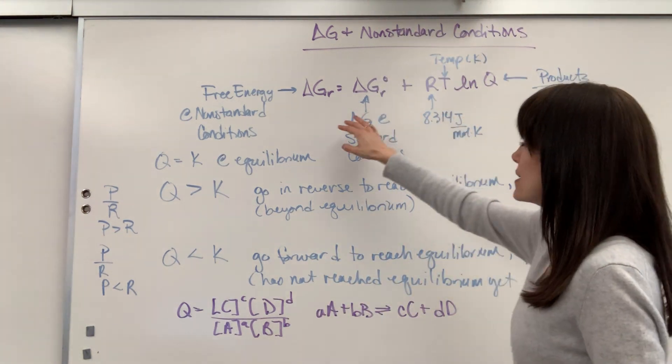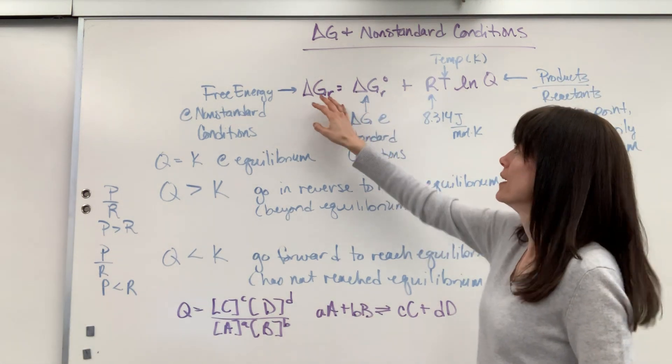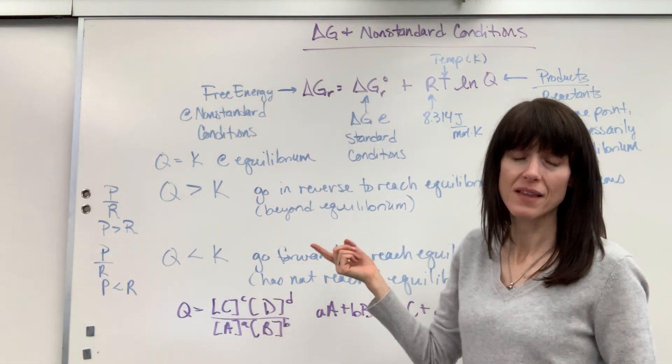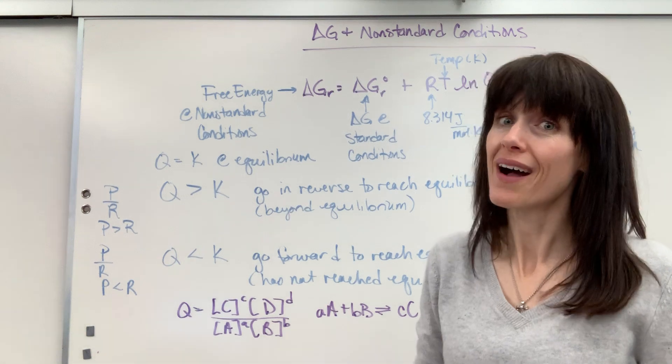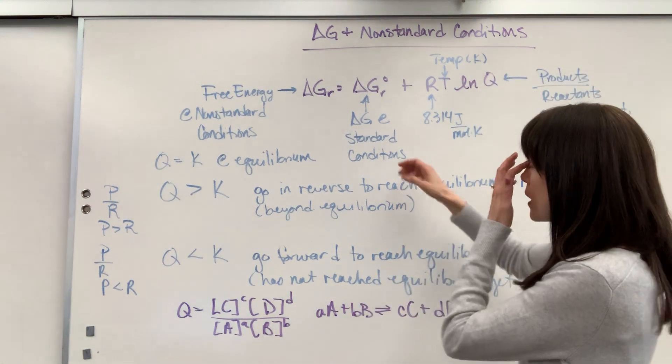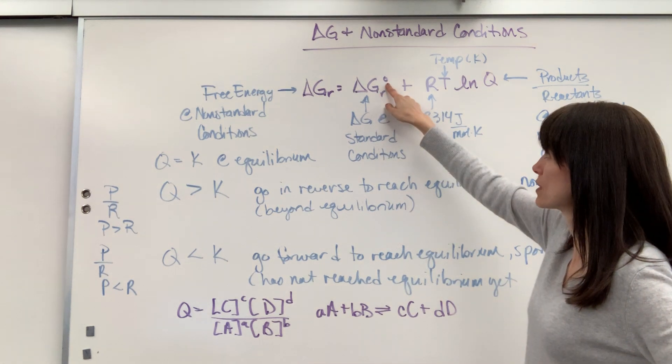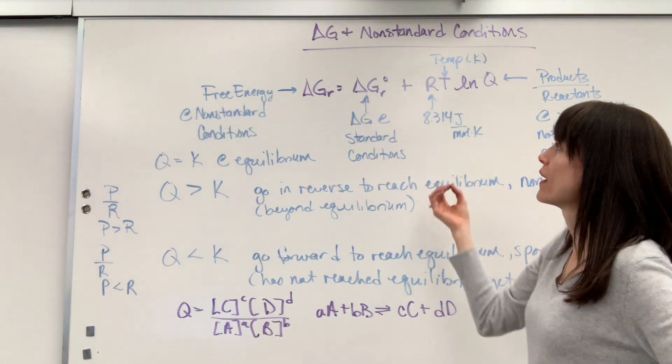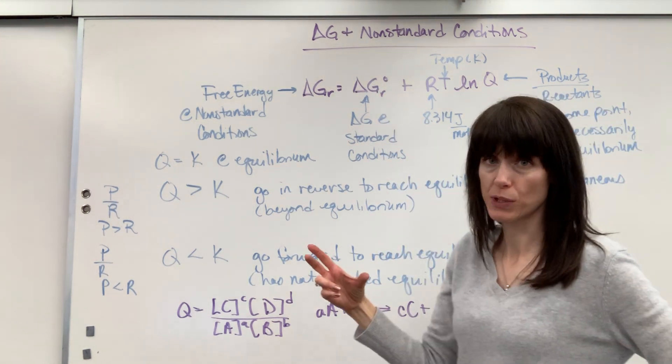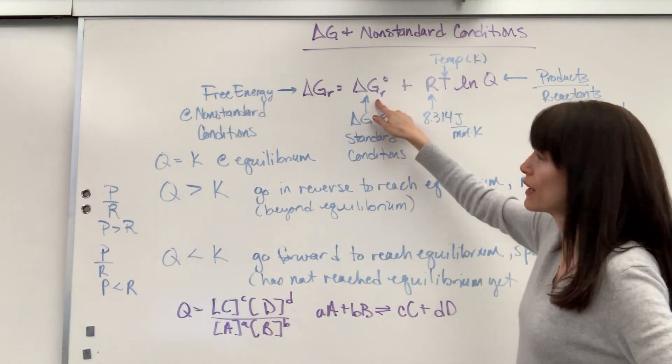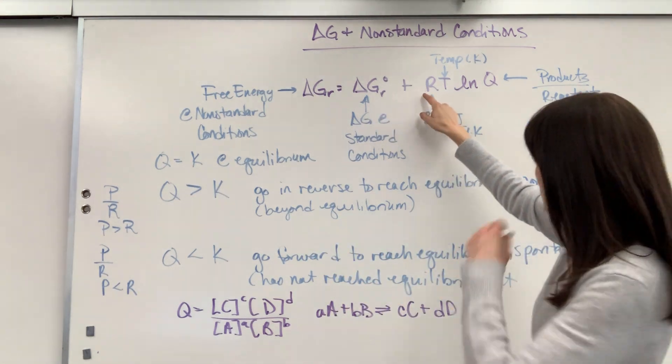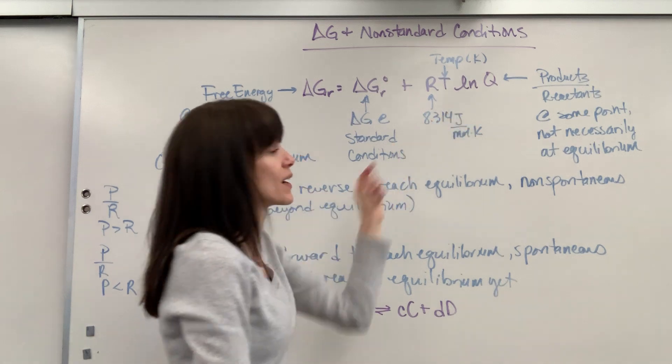So at non-standard conditions, we have a formula. Delta G, notice what's missing from that? The not. It's saying you're not at standard conditions. So this equals Delta G not, gives free energy at standard conditions, that's the not. So if I were, for this particular chemical reaction, at standard conditions, here's the value of Delta G, plus RT times the natural log of Q.